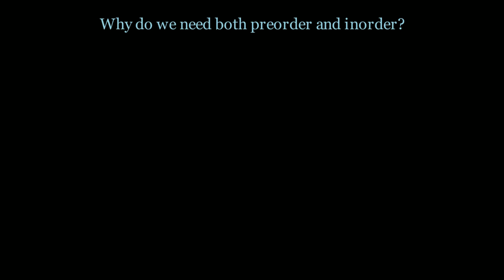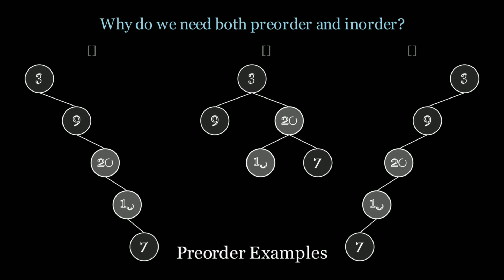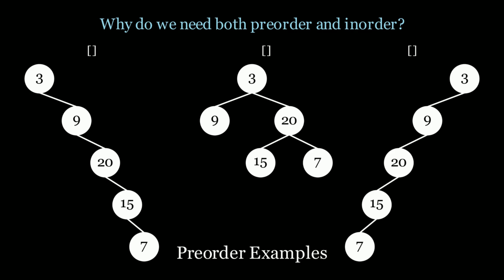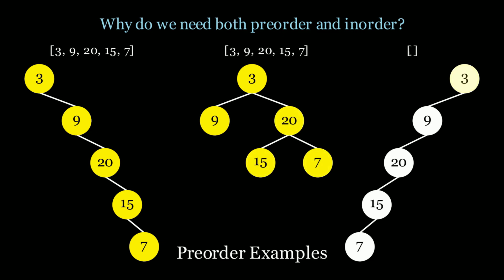A common question is: why do you need both the pre-order and in-order traversals to construct a tree? Can't you only use one? The answer is no. If I create three trees and calculate the pre-order traversals — a skewed left tree, a balanced tree, and a skewed right tree — we get 3, 9, 20, 15, 7 for all three. They're exactly the same. So a pre-order traversal does not guarantee the structure of the tree; it only tells us which nodes were explored first.